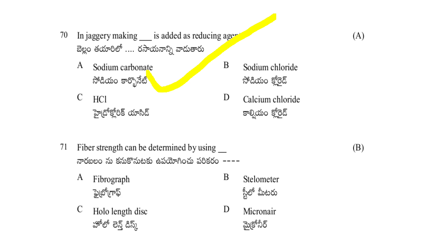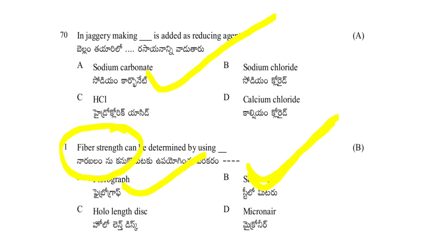Fiber strength can be determined by: fibrograph, stelometer, hollow length disc, or micronaire. Strength is determined with the help of stelometer, and length by fibrograph. Since the question asks about strength, the answer is B — stelometer.